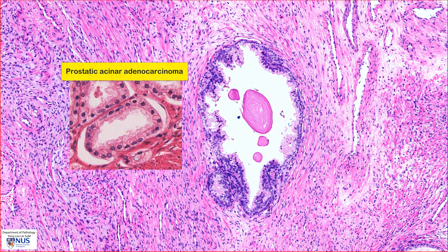In prostatic acinar adenocarcinoma, the malignant glands are usually lined by a single layer of malignant epithelium rather than two layers of epithelium. In this area, we can also see very nicely formed corpora amylasia.